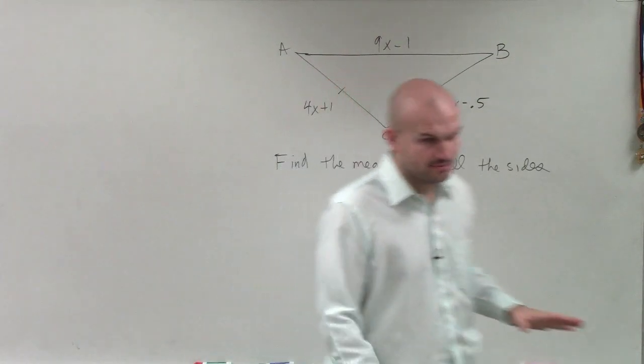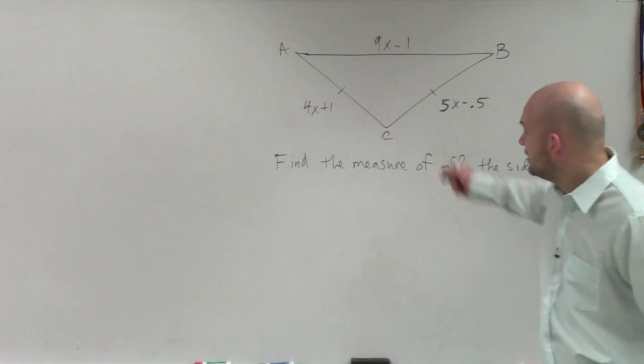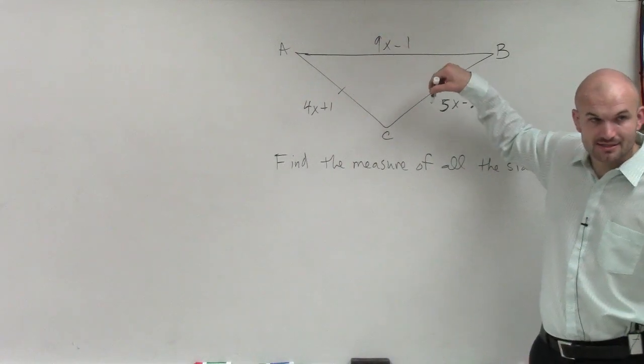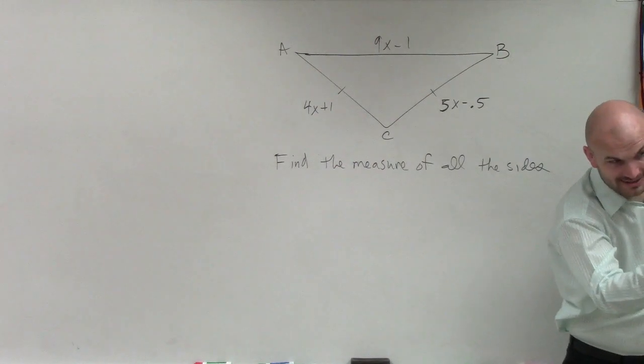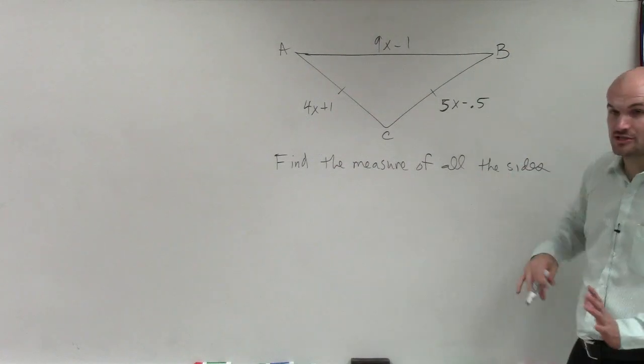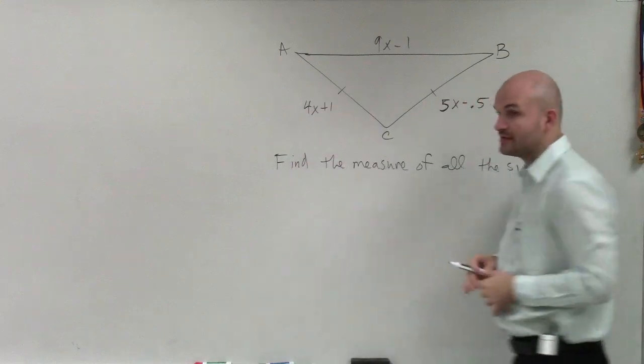All right, so ladies and gentlemen, what we have is I have a triangle. And we notice right now that this triangle has two side lengths. So therefore, we can call this an isosceles triangle where these two measures are equal to each other.